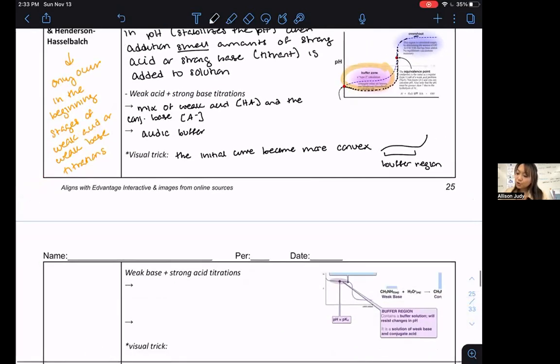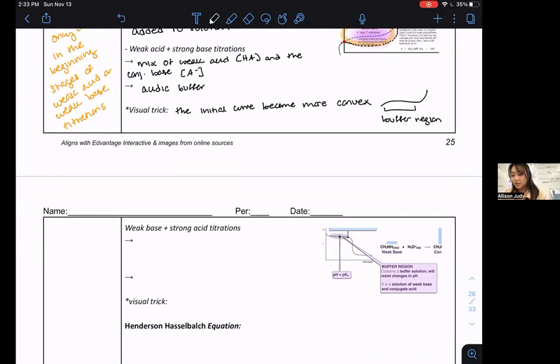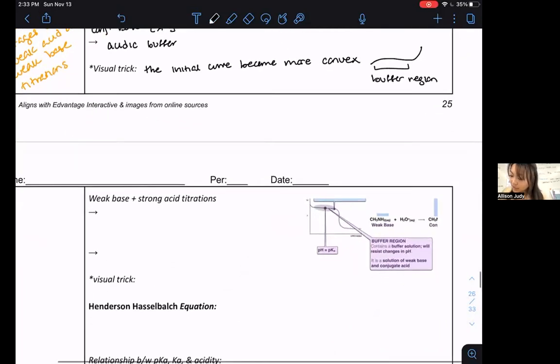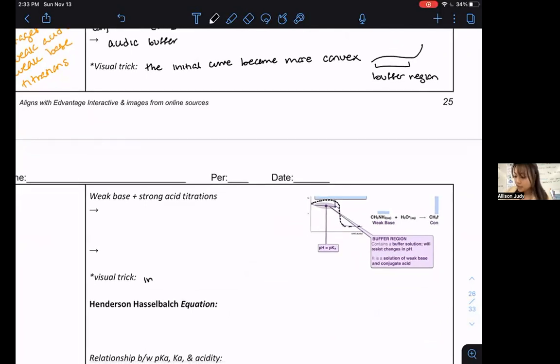And then the same thing is true when we look at a weak base and strong acid titration. We would see normally in this curve, we would see a bulbous beginning down and then flows into what we have depicted here, but the beginning half of the titration is changed. Now, instead of having the initial curve be convex, we now see it be concave. Initial curve becomes more concave where we see it kind of dip down and go down. And this is what we call our buffer region for a weak base titration.